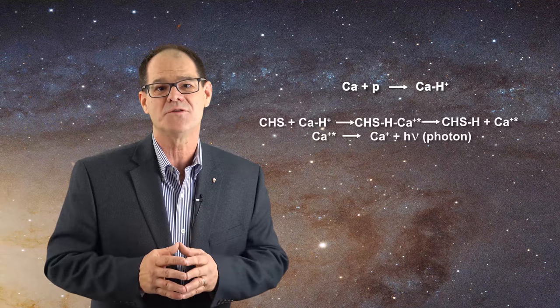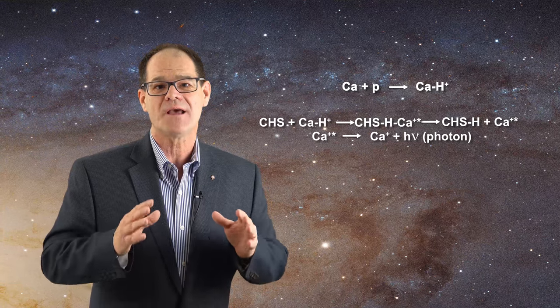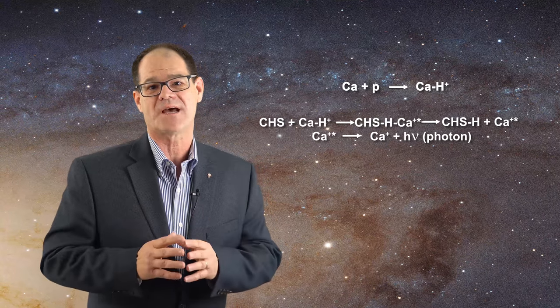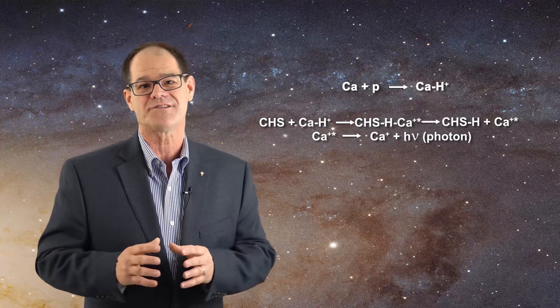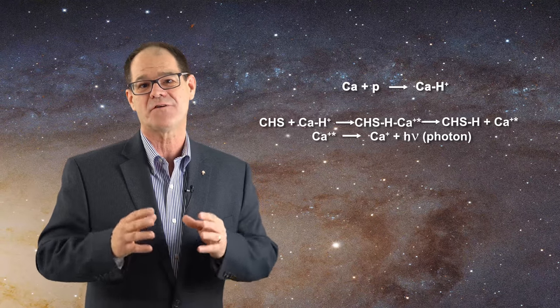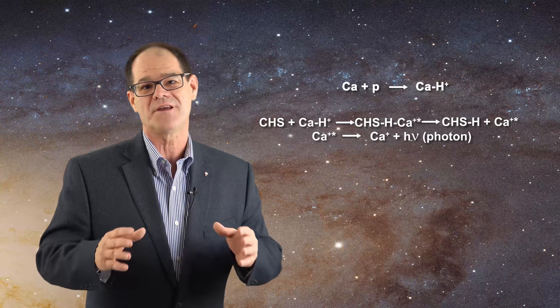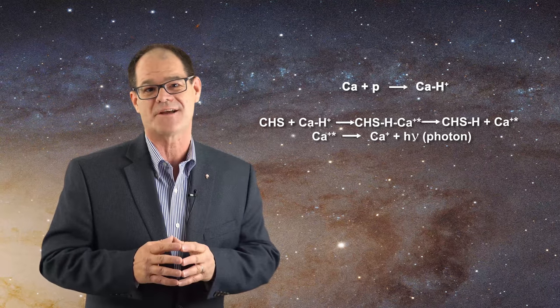If a lone proton binds to a free calcium atom, one can again get calcium 2 but now by donating a hydrogen atom to a condensed hydrogen structure. In this way both protons and hydrogen atoms can be harvested from the solar atmosphere using metal hydride condensation reactions.